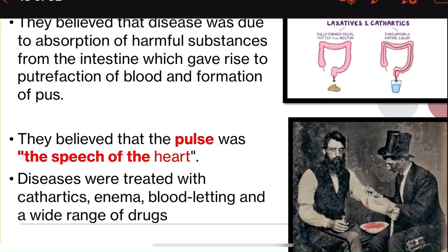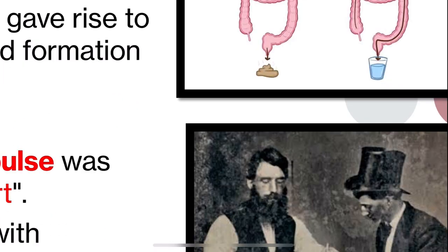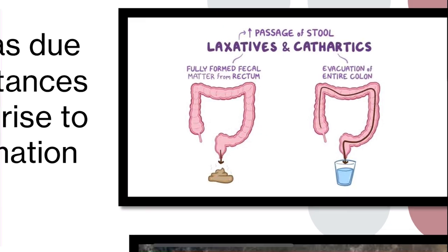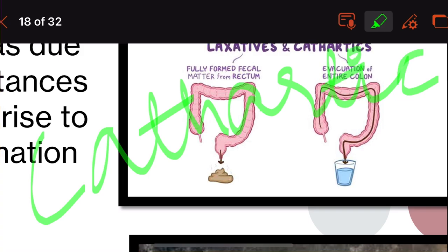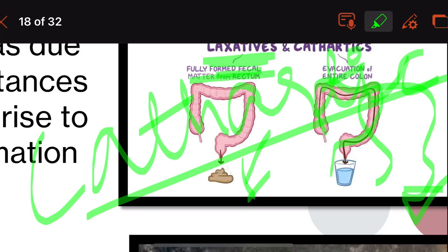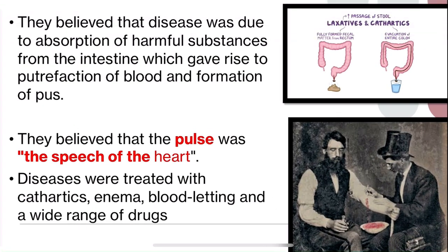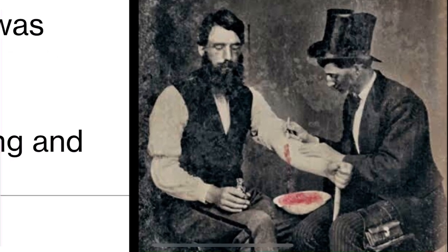To treat these harmful substances, Egyptians used cathartics. Cathartics are substances which accelerate defecation, similar to laxatives but stronger — whereas laxatives expel formed fecal matter from the rectum, cathartics empty the entire colon and intestine. They also believed in cruel methods such as bloodletting and enemas, and used a wide range of drugs. The discovery of the pulse was very important; they considered it the speech of the heart.